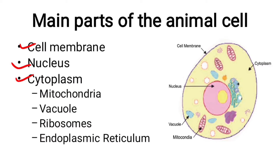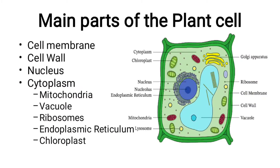Additional parts include the cell wall and chloroplasts. The cell wall is present only in plant cells, not in animal cells. Chloroplasts are also found only in plant cells, not in animal cells.